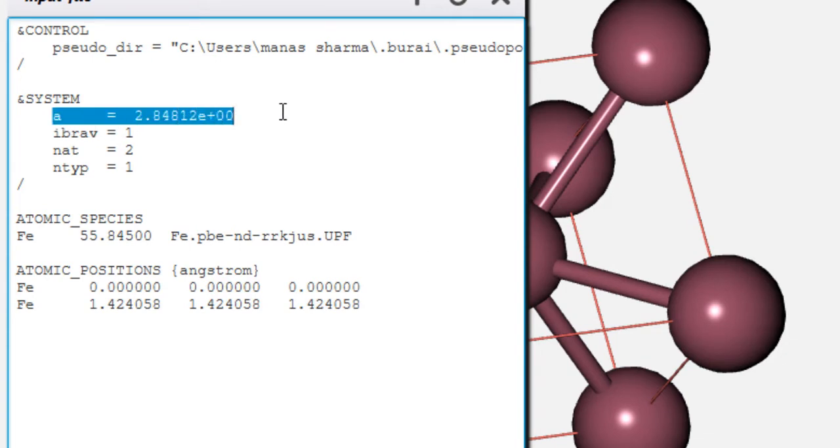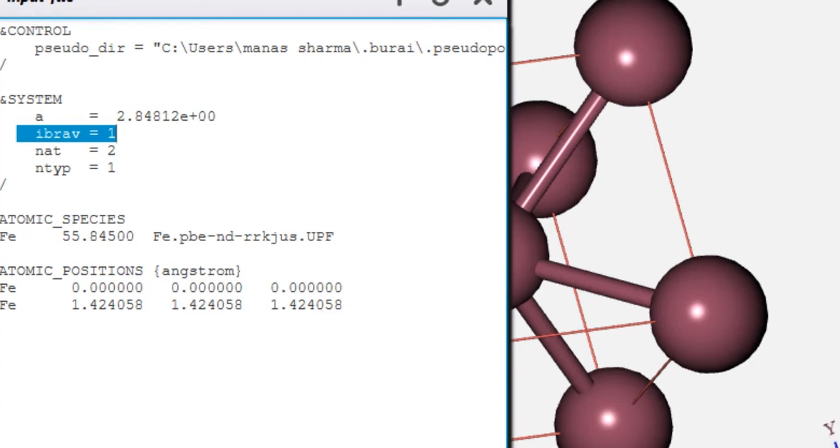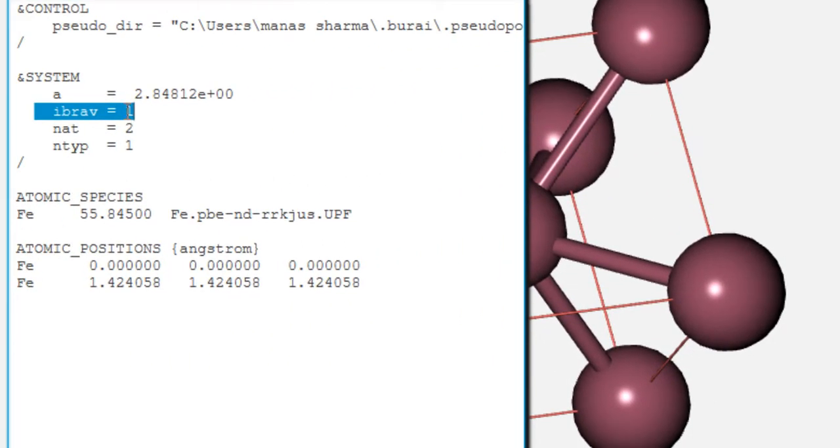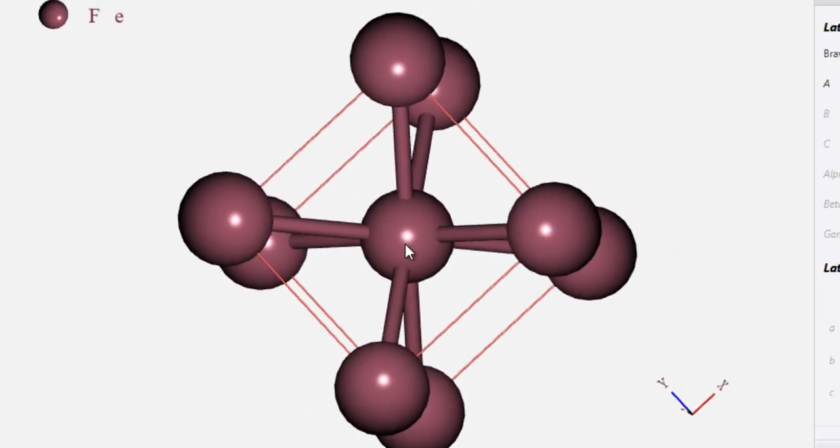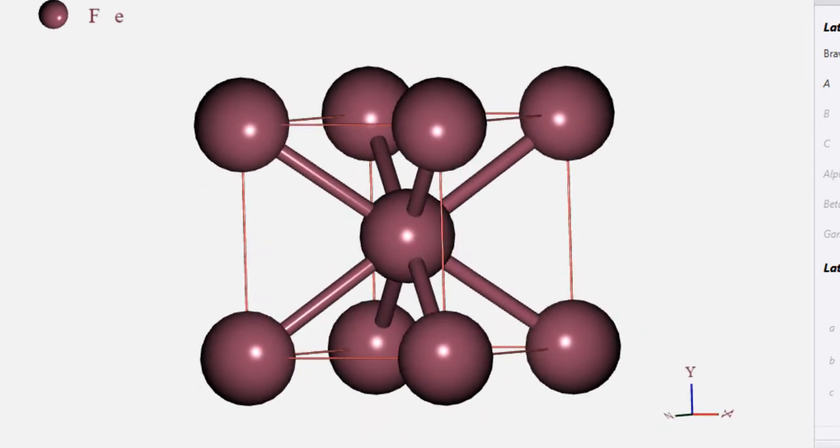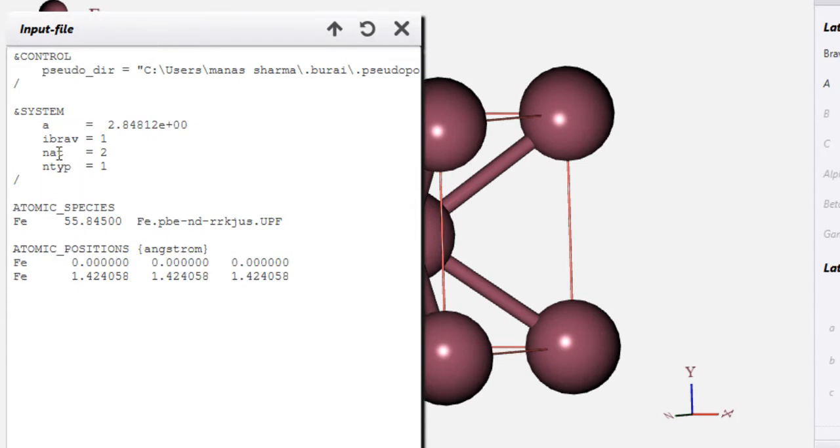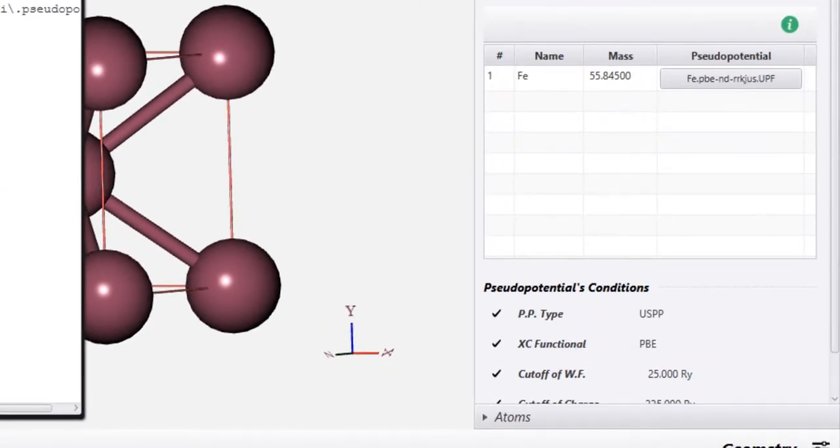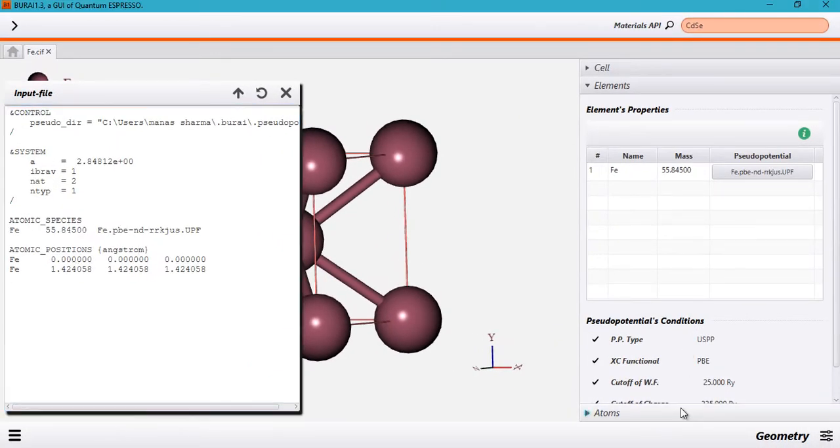So in case you missed those last videos, here we have the input file for the geometrical aspects of our system. A specifies the lattice parameters. Since in our case, the lattice type is cubic, IBR, which is a Quantum Espresso parameter is 1 and therefore you only need to specify only a single lattice parameter. Then the number of atoms is 2 because it is a cubic lattice. So you only have a single atom at the center. Then all these 8 atoms only contribute one-eighth to this particular unit cell, so effectively they are only a single atom. So in total we have 2 atoms. And the types of atoms is only 1 because we only have a single kind of atoms.